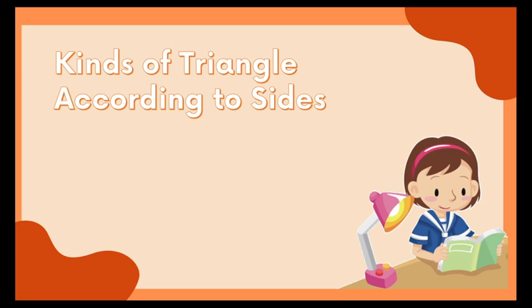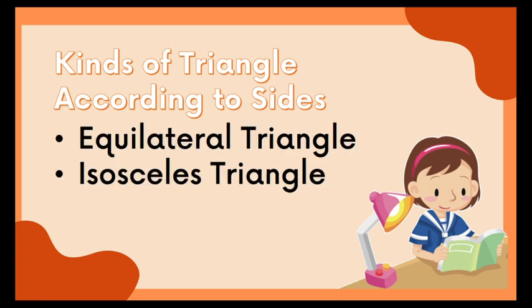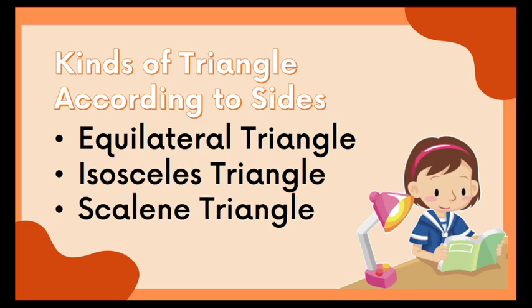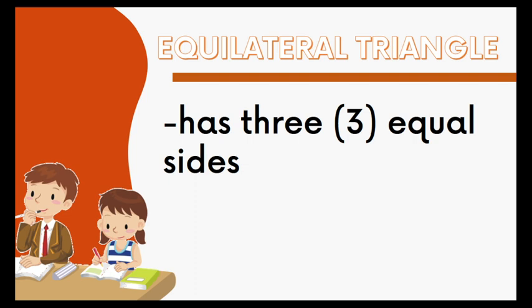So what are the triangles according to sides? We have the equilateral triangle, the isosceles triangle, and the scalene triangle. The equilateral triangle is a triangle that has three equal sides. From the word equal, all of the sides of an equilateral triangle are equal.